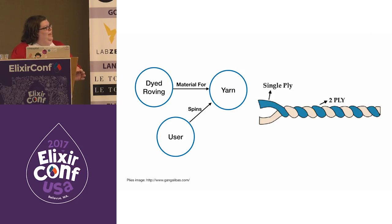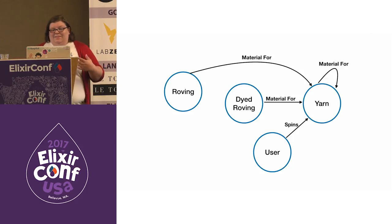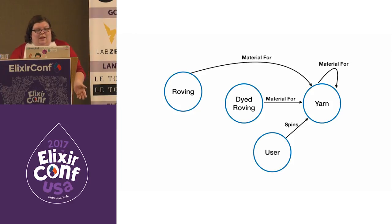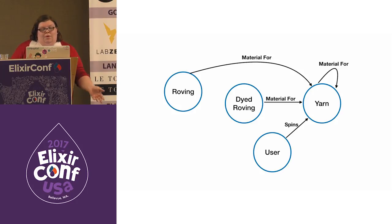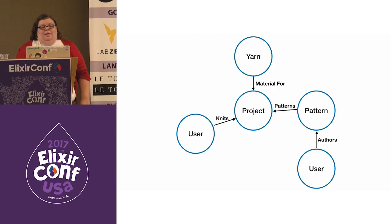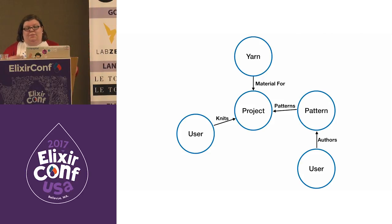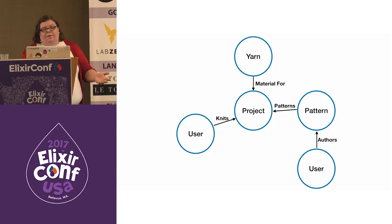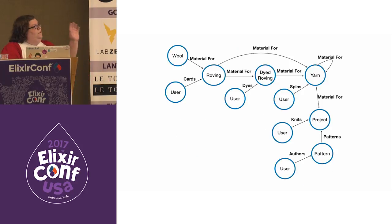The spinning model is a bit more complicated. Not all roving needs to be dyed — we can skip the dyeing process and go from carding directly to spinning. We can also combine more than one roving together while spinning, and we have the option of a spun ply looping back as material for more spinning. At the end we have a finished yarn used in a project. The user has a relationship of 'knits', but you could also have crochets or weaving. The project can have a pattern associated with it, and the pattern itself has an author.